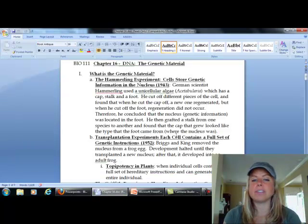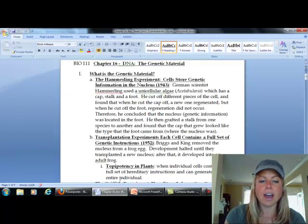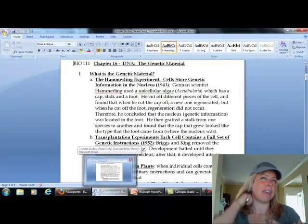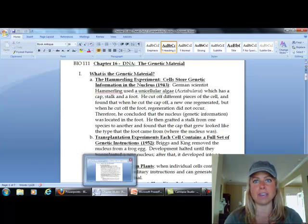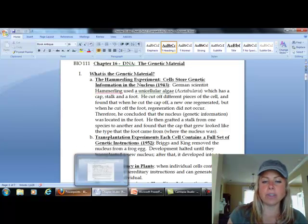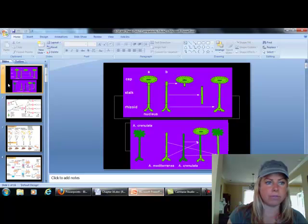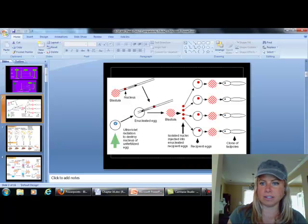Now, the next one is going to be the Briggs and King experiment, and this is going to kind of be how they proved that all of the instructions for something are going to be in the nucleus. So what they did was they actually used frog embryos. So you can see in this picture here, if I can make it bigger.